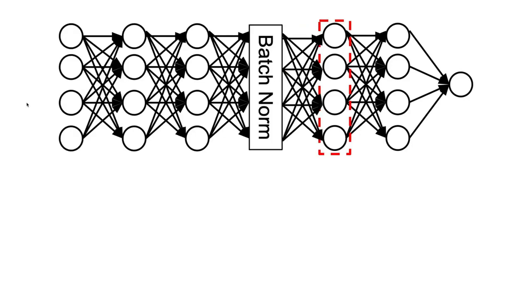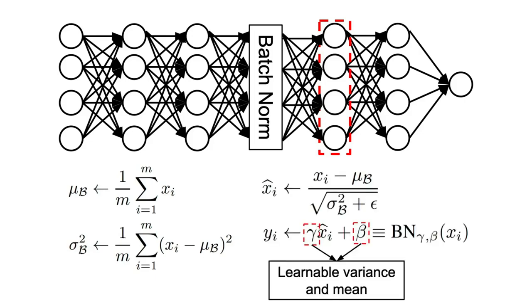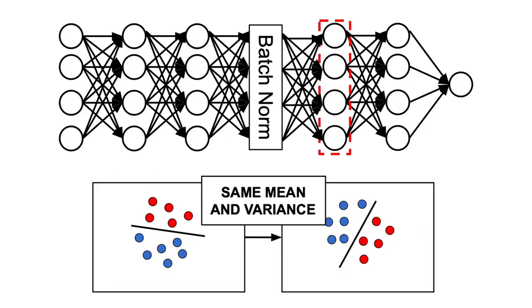BatchNorm solved this issue by firstly normalizing the layer's input using the mean and variance of the current batch and then rescaling the result to a desired scale using two learnable parameters, gamma and beta, which are used to increase the expressivity of the model. What we achieve by applying this simple trick is that we make sure that the mean and variance of the input remains the same, and thus our layer doesn't have to relearn the same function over and over again because there is no internal covariance shift in the input.